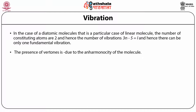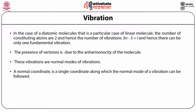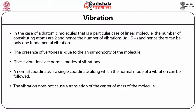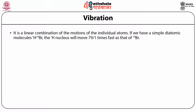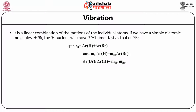These vibrations are normal modes of vibration. A normal coordinate is a single coordinate along which the normal mode of a vibration can be followed. The vibration doesn't cause a translation of the center of mass of the molecule; it is a linear combination of the motions of the individual atoms. If we have a simple diatomic molecule, say HBr, the H nucleus will move 79 times faster than that of ^79Br. So Q = R minus R_0 = delta_R_H plus delta_R_Br, and M_H * delta_R_H = M_Br * delta_R_Br. Taking the ratio: delta_R_Br / delta_R_H = M_H / M_Br, i.e., mass of hydrogen over mass of bromine.